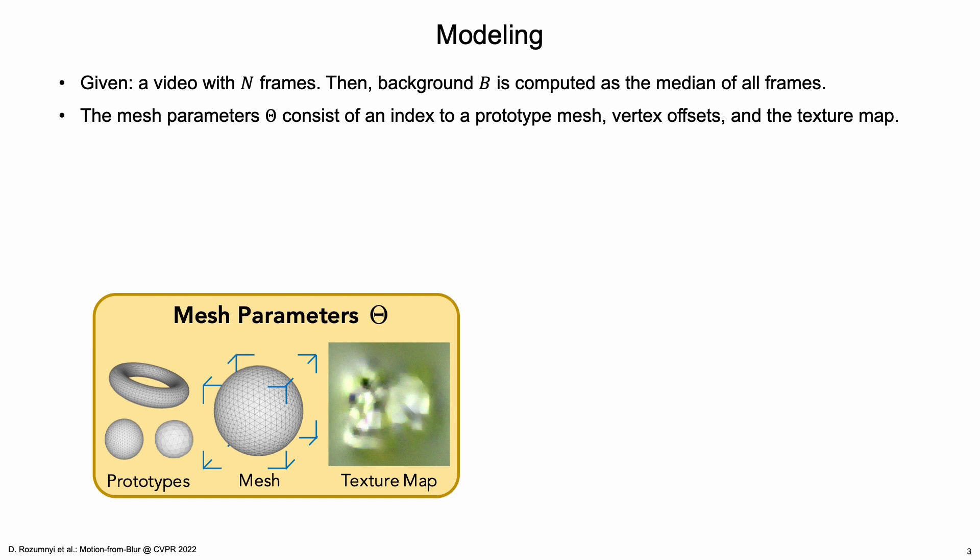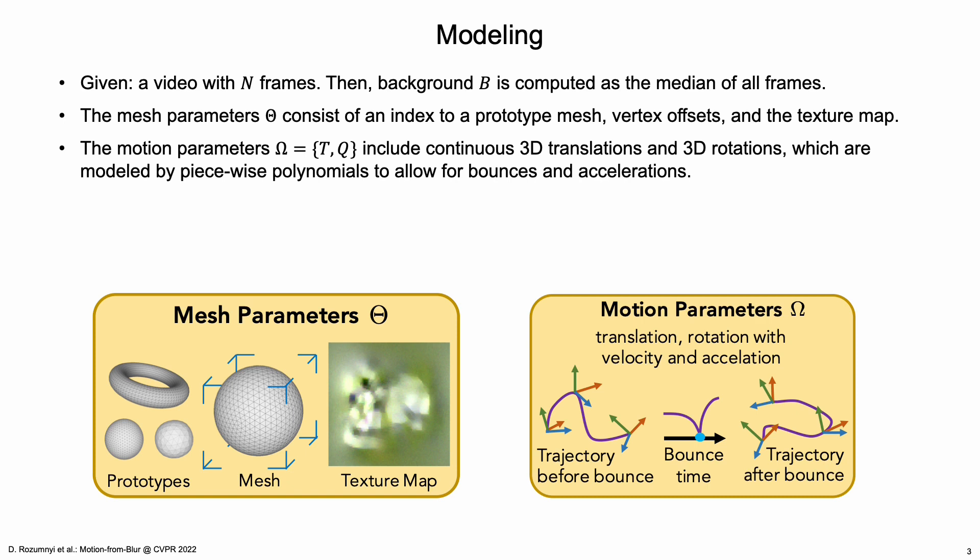initial vertex positions, and texture mapping are assumed to be fixed. The motion parameters omega include continuous 3D translations and 3D rotations which are modeled by piecewise polynomials to allow for bounces and acceleration.